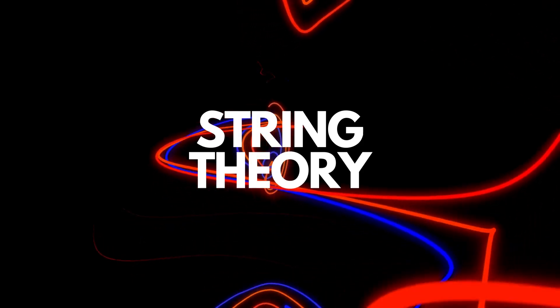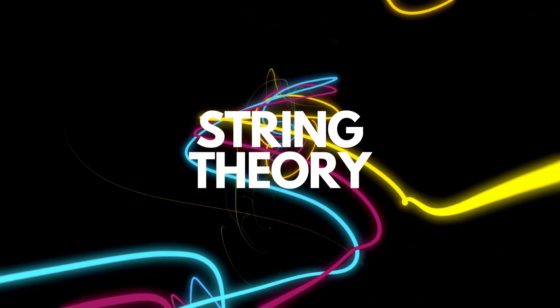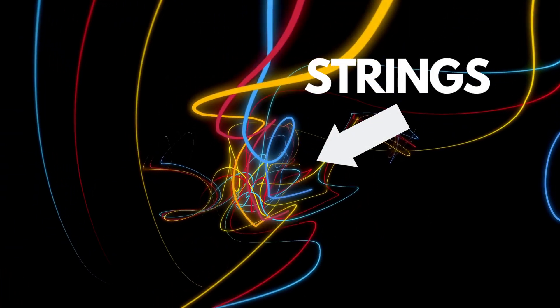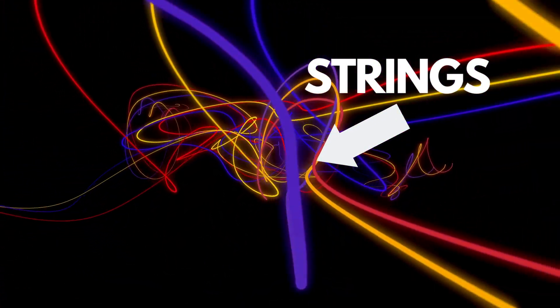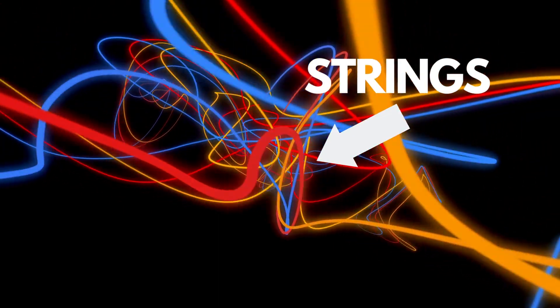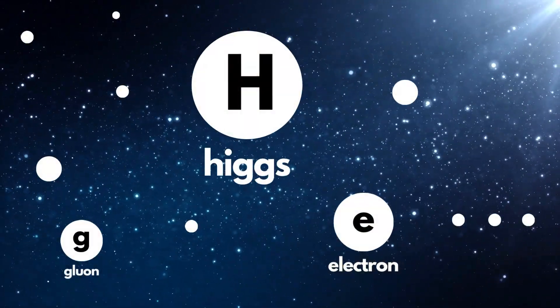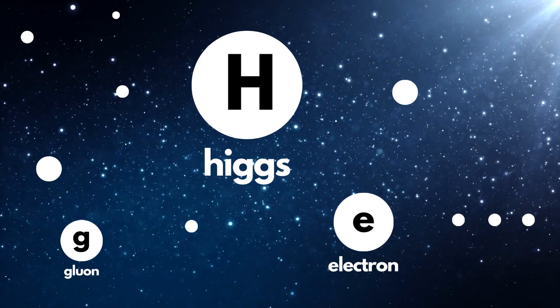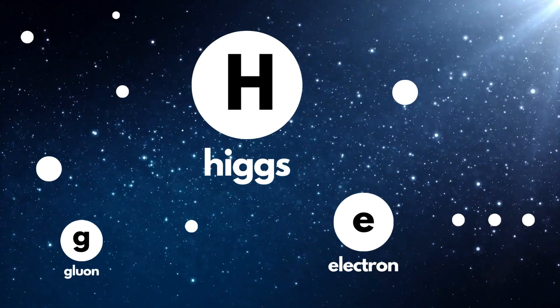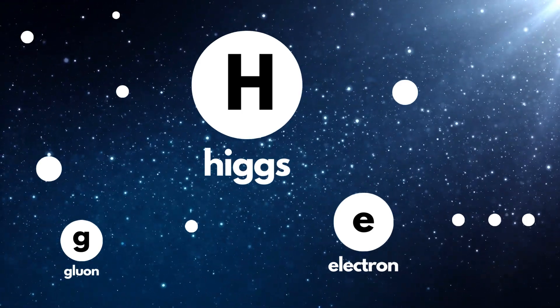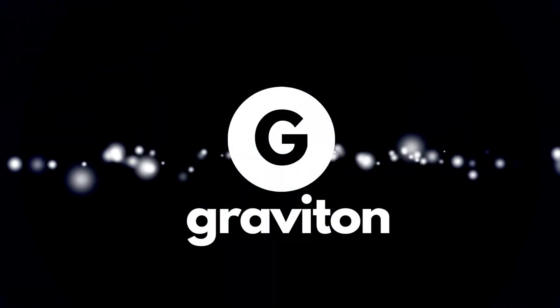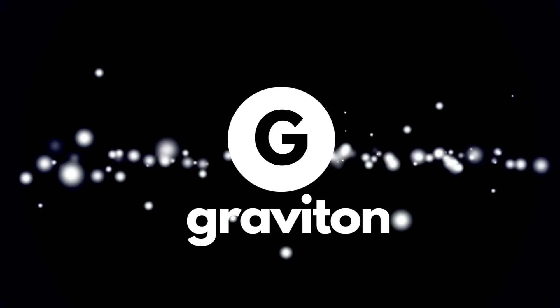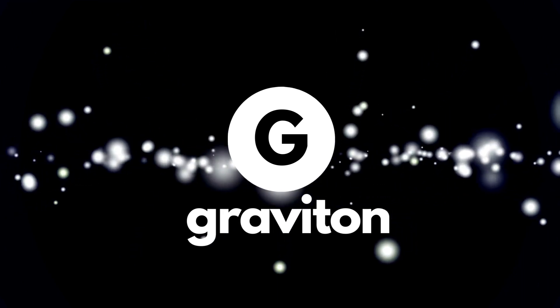String theory is the most popular competitor to loop quantum theory. Strings, which gave its name to string theory, are the basic components of matter and energy. According to this theory, strings give rise to the numerous subatomic particles seen in particle accelerators. These strings are also responsible for gravity. The graviton, the particle responsible for gravity, is the inevitable result of this theory.